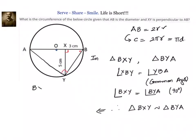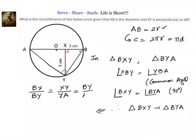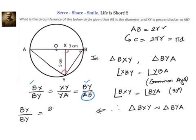That is: BX divided by BY equals XY divided by YA, equals YB divided by AB. Now what we need to find out is AB. So we will consider the first and last ratios. What we have is: BX divided by BY is equal to BY divided by AB.